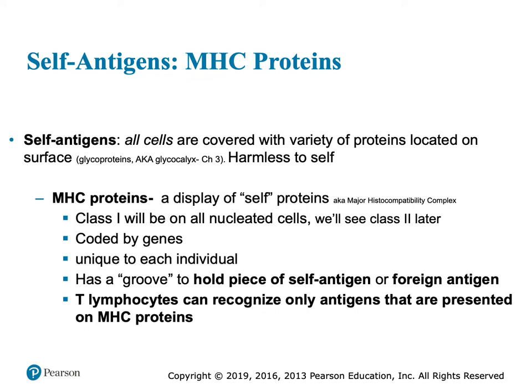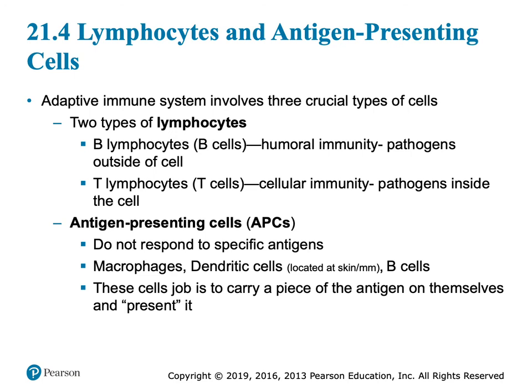Later when we do cellular immunity, you'll see that T lymphocytes get activated when presented with an antigen on an MHC protein. If you're lacking any of that, you can't get that T lymphocyte to do his job. Three important cells — I've already mentioned two: B lymphocytes and T lymphocytes. B lymphocytes are humoral immunity; they make antibodies. B cells work on pathogens floating around on the outside of cells — antibodies aren't in the cell, they're in the fluids: blood, lymph, tissue fluid.